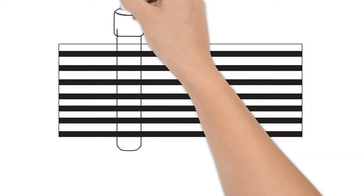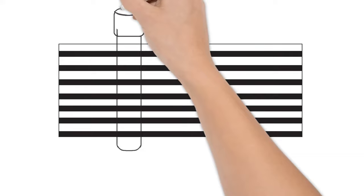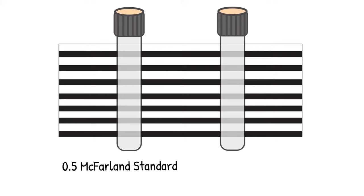To standardize the inoculum, the bacteria suspension is vortexed and compared to the turbidity directly with the 0.5 McFarland standard under adequate lighting. The tubes are positioned side by side with 0.5 McFarland standard against a white card containing several horizontal black lines. The turbidities are compared by looking at the black lines through the suspensions.